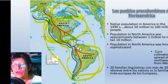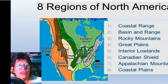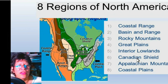Here in North America we don't have great civilizations like the ones that took place in Mexico and Central America — the Mesoamerican area. These are the eight cultural regions: Coastal Range, Basin and Range, Rocky Mountains, Great Plains, Interior Lowland, Canadian Shield, Appalachian Mountains, and Coastal Plains.